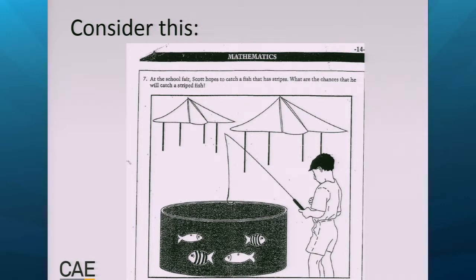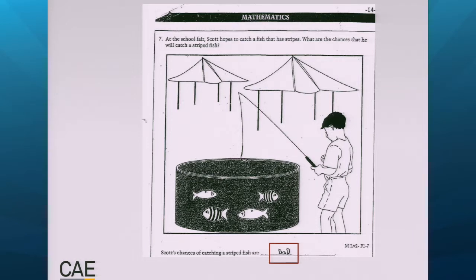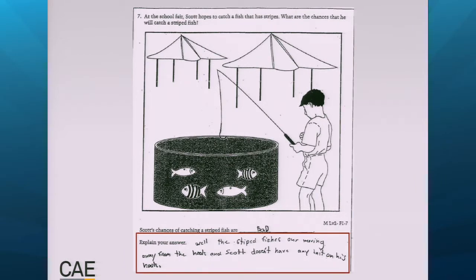But we love this item because look at what this student says: 'Scott's chances of catching a striped fish are bad.' Why, student, are Scott's chances bad? This item is supposed to be one of the innovative open-ended item types designed to elicit responses that get students to think. The next part asks for the reasoning behind the response. And this is awesome — the student explains: 'The striped fish are moving away from the hook and Scott doesn't have any bait on his hook.'